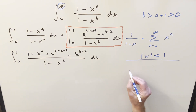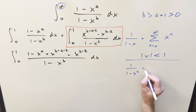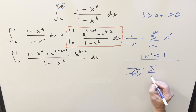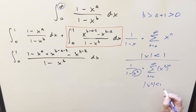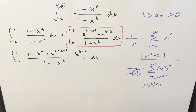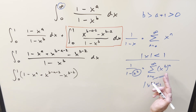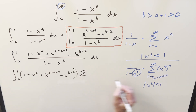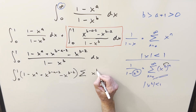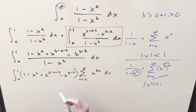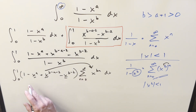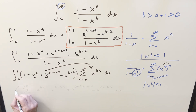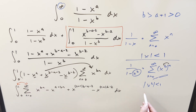Instead of 1 over (1 minus x), we now want 1 over (1 minus x to the b), which we write as the sum from n equals 0 to infinity of x to the bn. Convergence requires x to the b to be less than 1, which holds for x in (0,1). We plug this series into the integral, distribute the numerator inside the sum using exponent properties, then swap the order of integration and summation — justified by the established convergence.